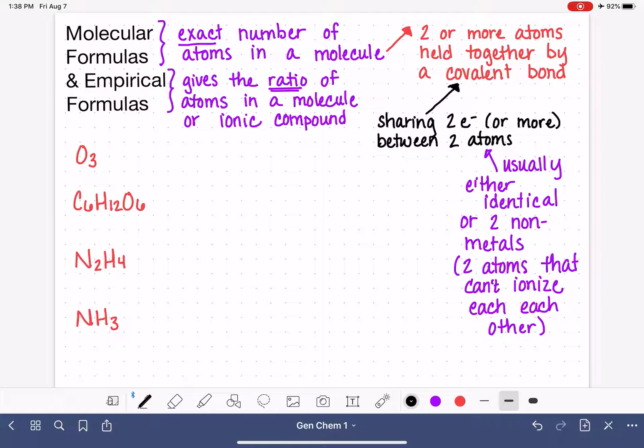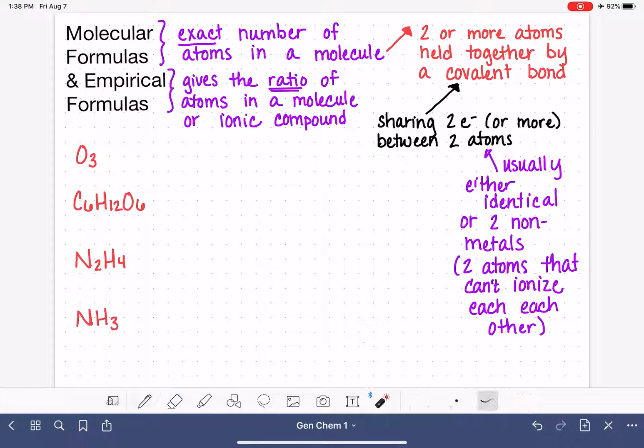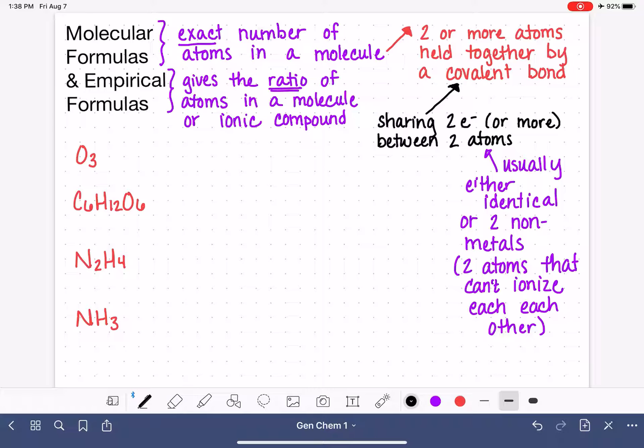In one of the previous slides, we looked at SN, I think it was SN2O4. And we talked about how we should reduce this formula down to the simplest set of numbers, which I believe was SnO2. And this, what we did here, was the concept of using the empirical formula, even though we didn't call it that. That's exactly what it was. So the empirical formula is just taking these molecular formulas and reducing them down to the simplest ratio.